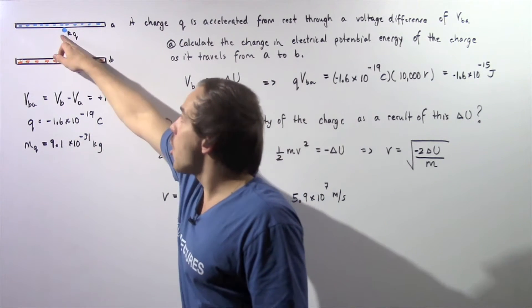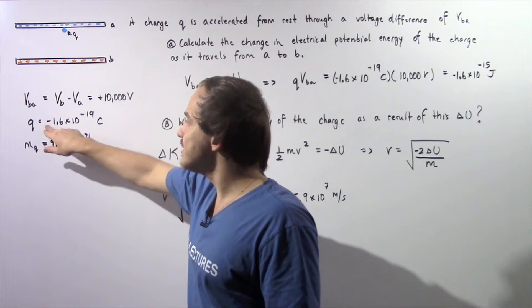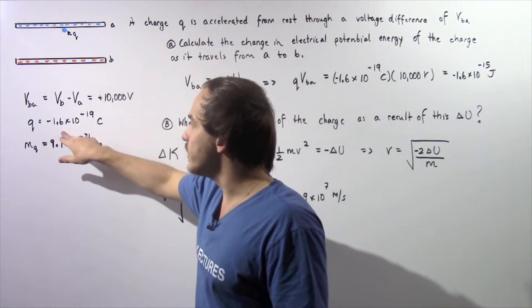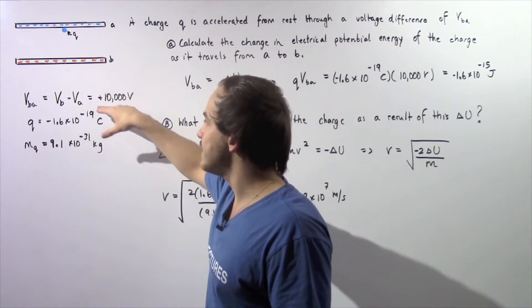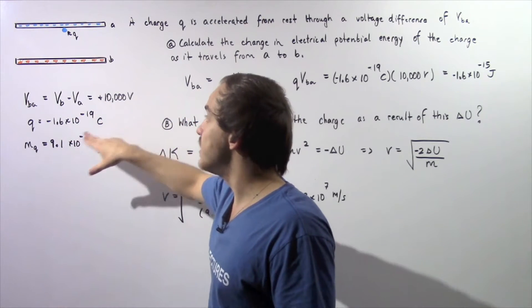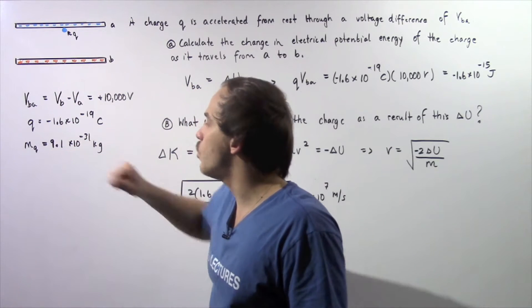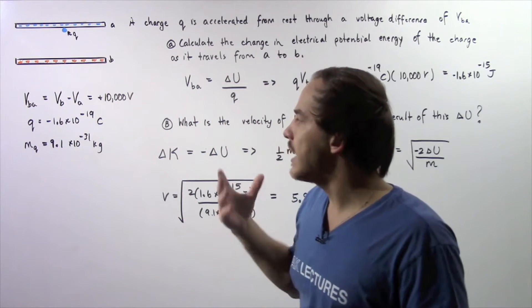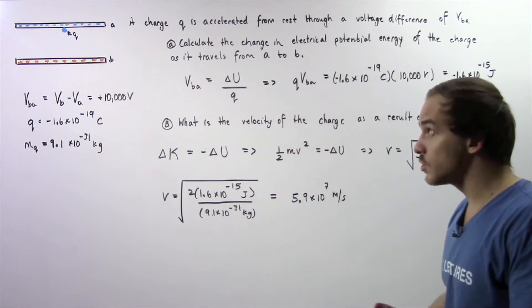The charge on this electric charge is negative 1.6 times 10 to the negative 19 coulombs, and the mass of this charge is 9.1 times 10 to the negative 31 kilograms.